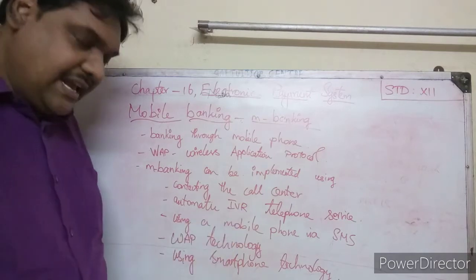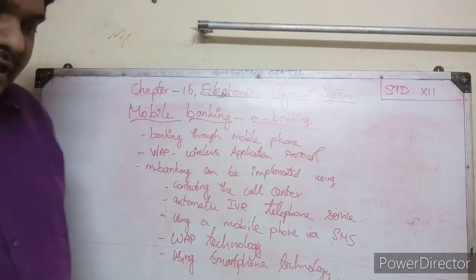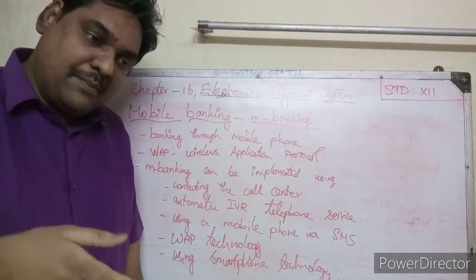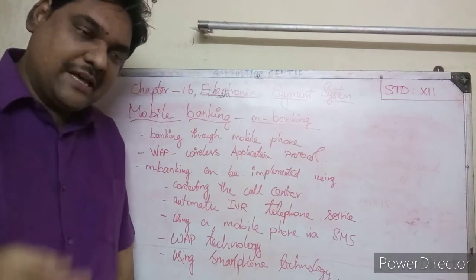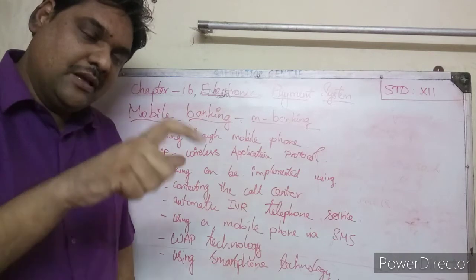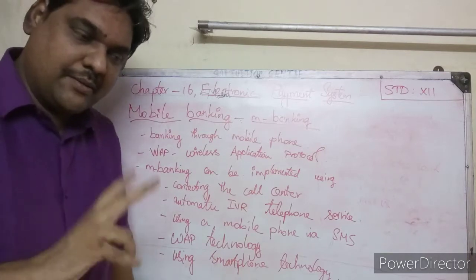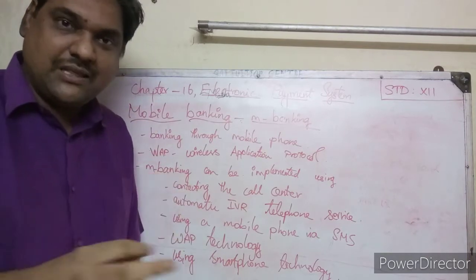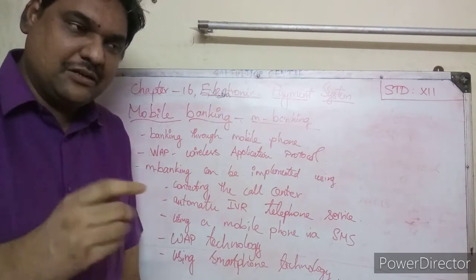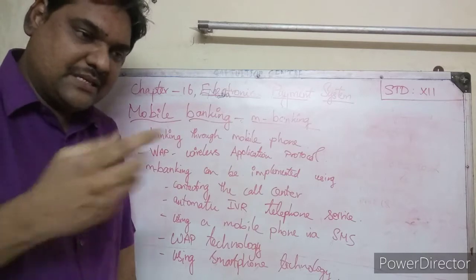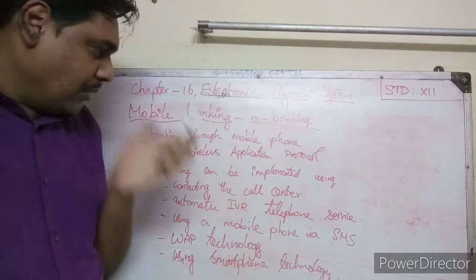The next method is the automatic IVR — Interactive Voice Recognition telephone service. When you call the bank, you dial some numbers and automatically a voice prompt appears: for cash withdrawal press one, for deposit press two, for balance inquiry press three. That is IVR — Interactive Voice Recognition.